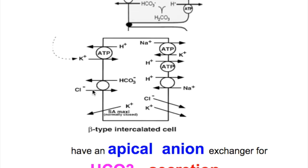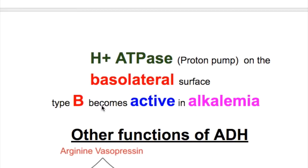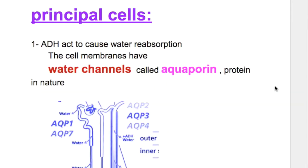Type B cells cause bicarbonate secretion and acid reabsorption. They have an apical anion exchanger for bicarbonate secretion and a basolateral hydrogen ATPase proton pump for acid reabsorption. Type B cells become active in alkalemia.